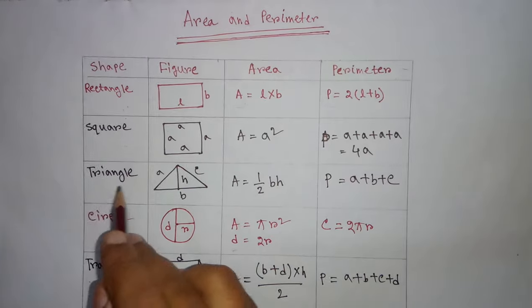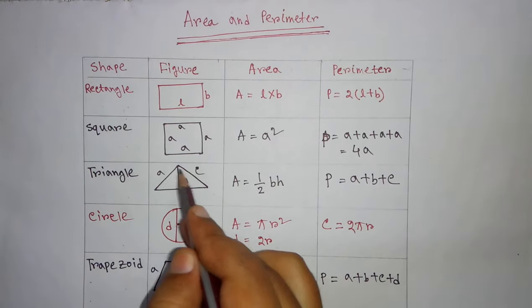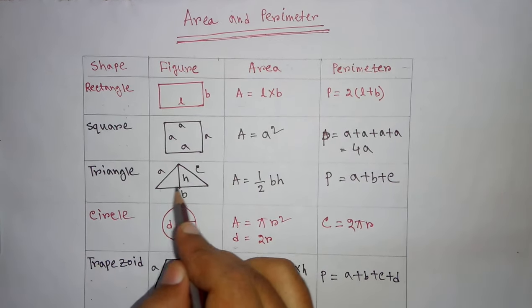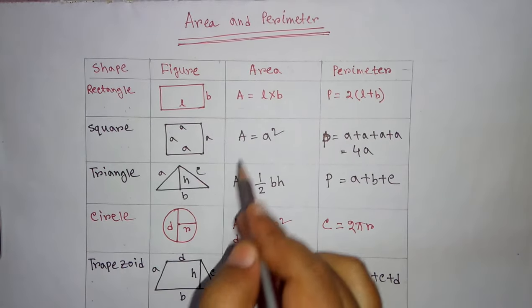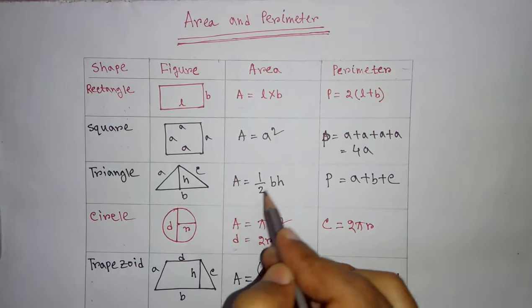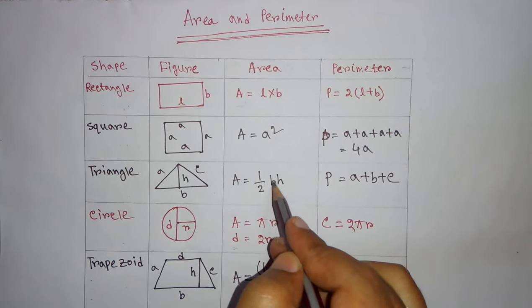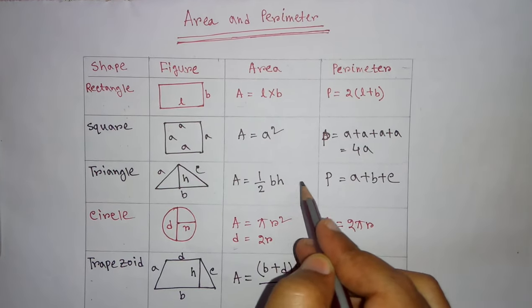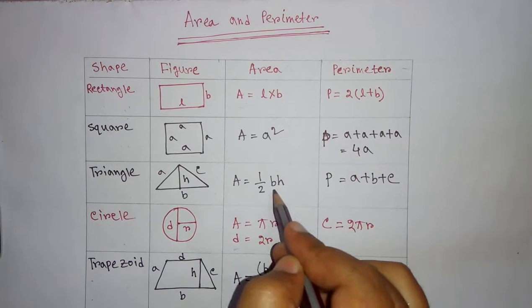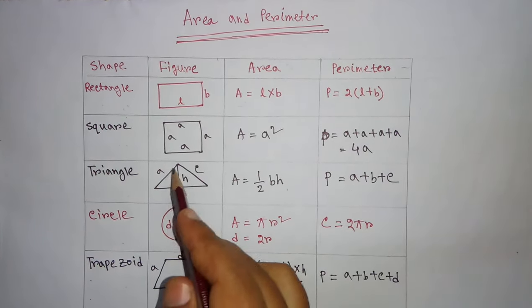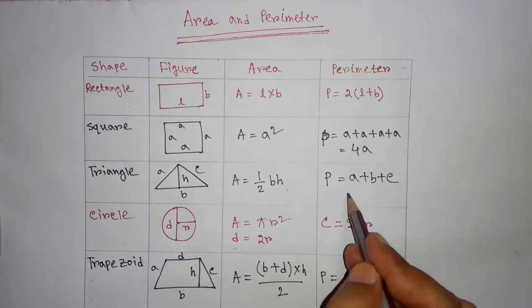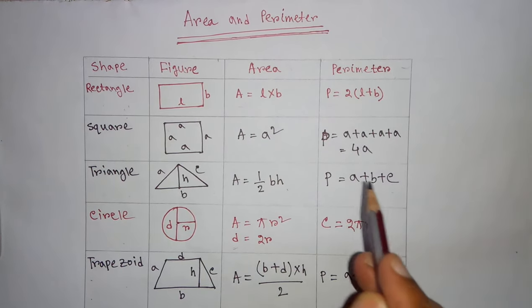Now, let's move on to triangle. Triangle is having three sides. We can call these sides as base. And this is the height. So, formula for the area of triangle is half into multiplied by base multiplied by height. The formula is half into BH. Now, what is the perimeter? Perimeter is the summation of all the three sides. That means A plus B plus C.